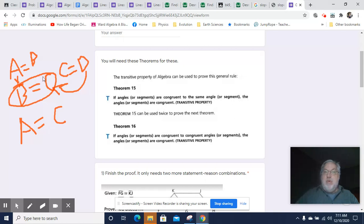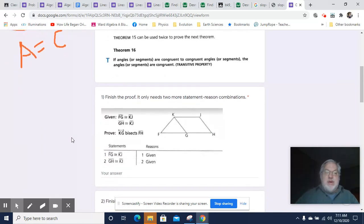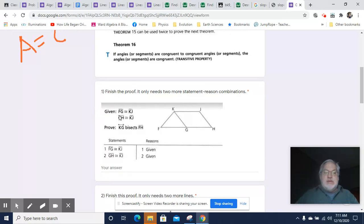Theorem 16 is just more things being congruent, so it's a little more steps. If angles or segments are congruent to congruent angles or segments, then the angles or segments are congruent. So here we have this situation. We know that FG is congruent to KJ. So let's mark this up. We also know that GH is congruent to KJ. So what we want to prove is that KG bisects FH.